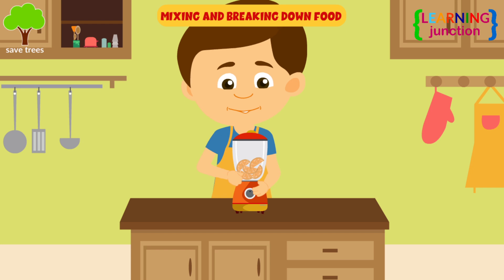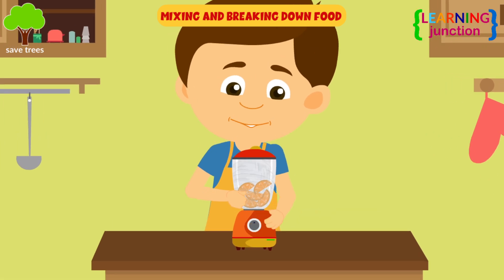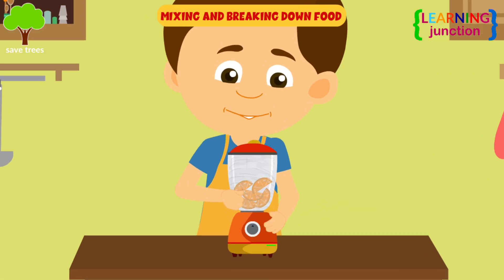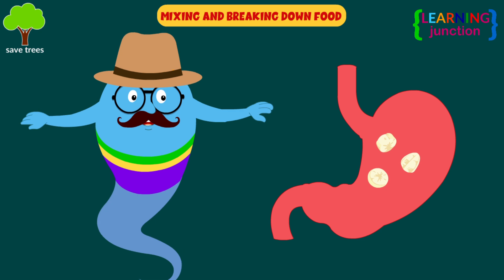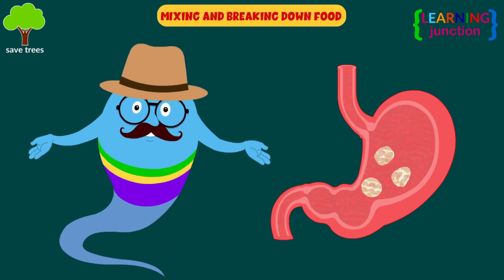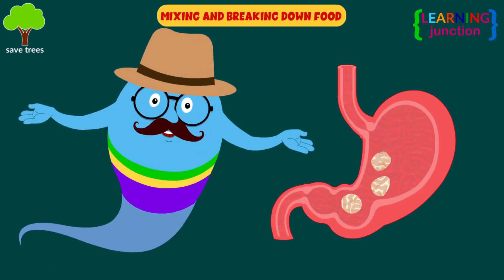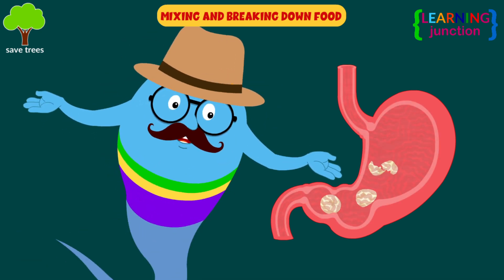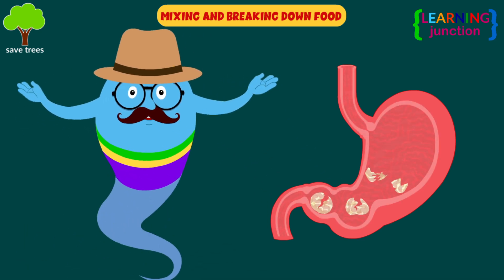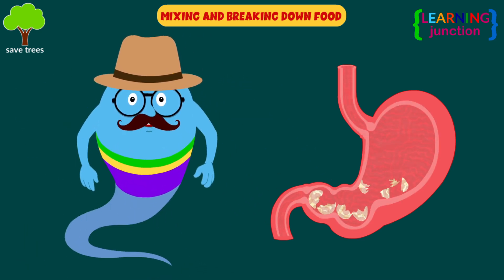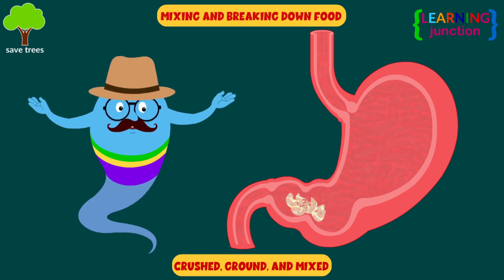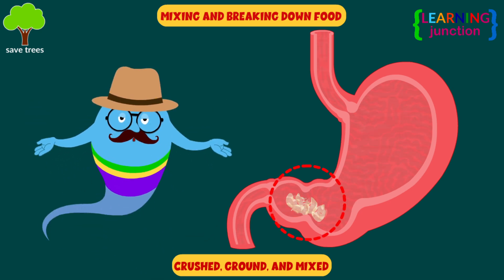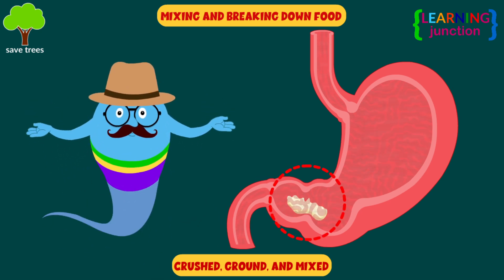Mixing and breaking down food. Look at this mixer and grinder — it grinds the food. Similar to this, the muscles move the contents of the stomach, and thus the solid parts of the food are crushed, ground, and mixed into a soft food pulp.